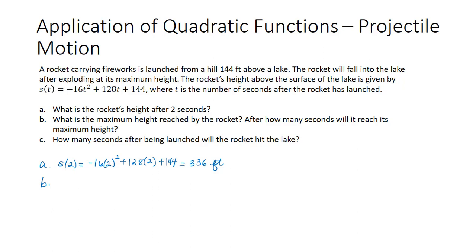So t is equal to negative b over 2a, which is negative 128, divided by 2 times a, which is negative 16. So this is negative 128 over negative 32, or 4. Now that represents the time that it's going to take to reach the maximum height. So in 4 seconds, the rocket will reach its maximum height.